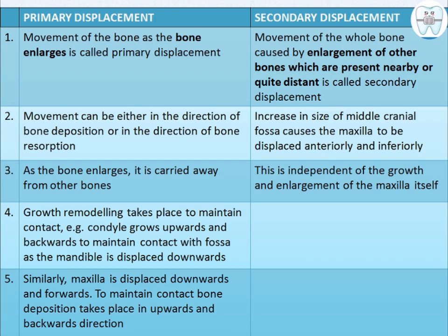Secondary displacement is the movement of a whole bone caused either by enlargement of other bones present nearby or distant. The bone being displaced is moved because other bones near it or quite distant from it are enlarging. For example, an increase in size of the middle cranial fossa causes the maxilla to be displaced anteriorly and inferiorly.